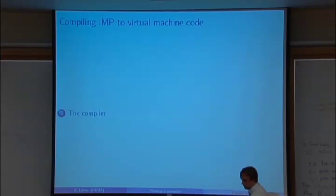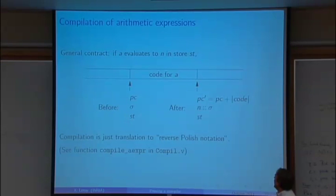So now let's compile. Let's translate imp to this little machine. So remember in imp, you have arithmetic expressions and Boolean expressions and commands. So we are going to structure our compiler in three functions, starting with arithmetic expressions.